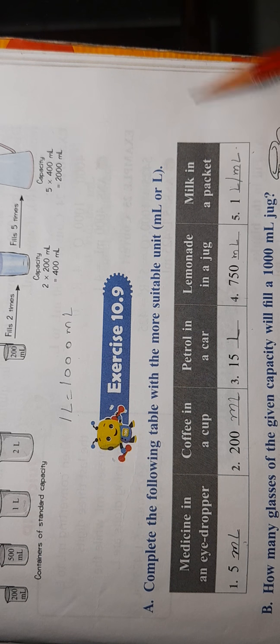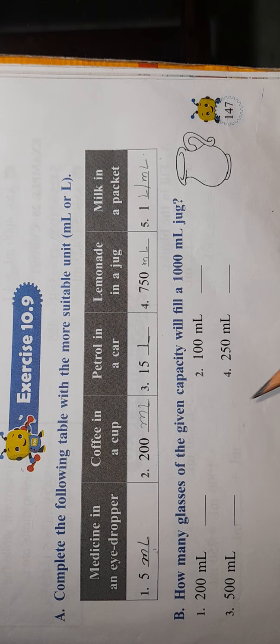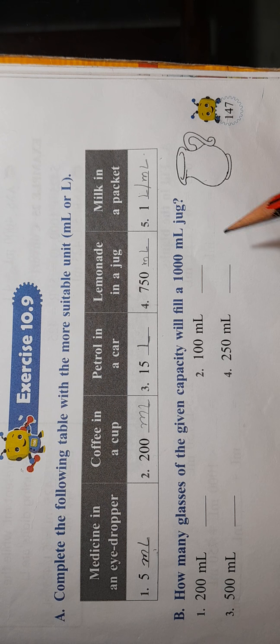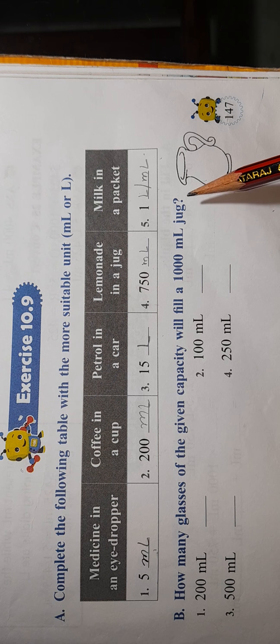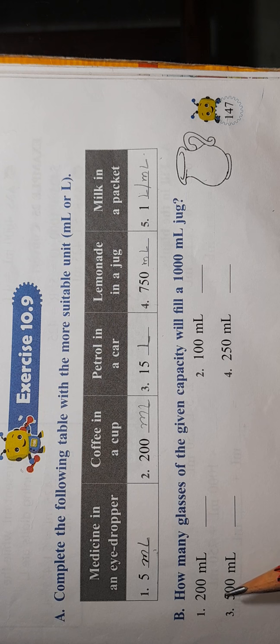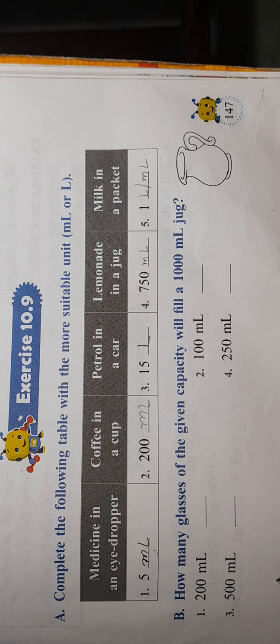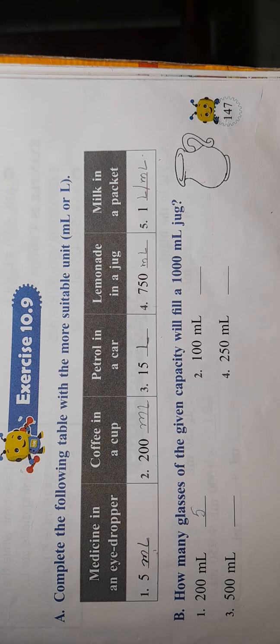Now part B is: how many glasses of the given capacity will fill a 1000 ml jug? If you have a 1000 ml jug with water, and you have to fill 200 ml glasses, how many glasses can you fill from 1000 ml? So you will divide 1000 by 200, you will get the answer 5. So you can fill five glasses of 200 ml.